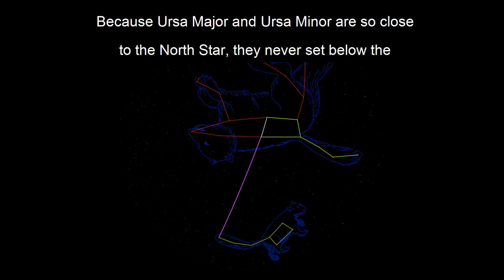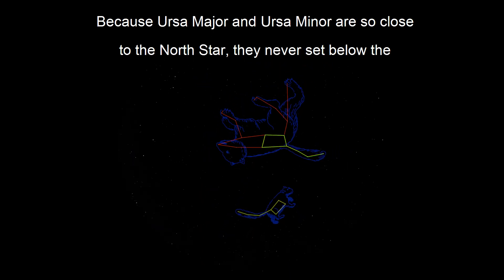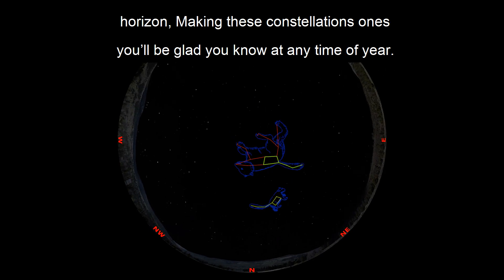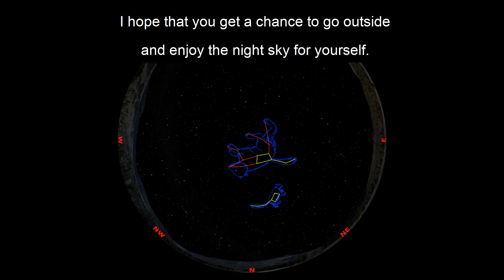Because Ursa Major and Ursa Minor are so close to the North Star, they never set below the horizon, making these constellations ones to be glad you know at any time of the year.